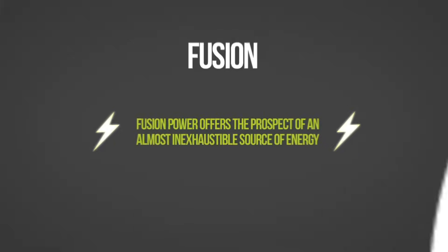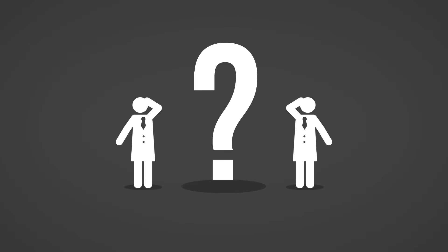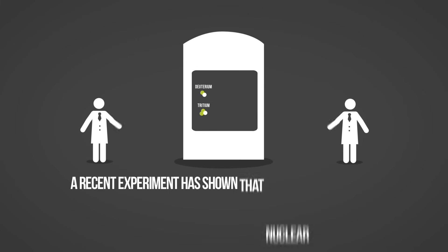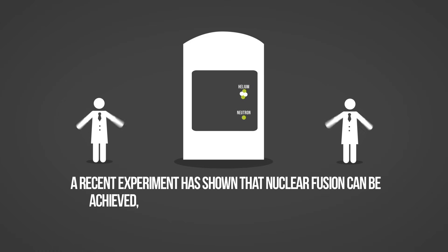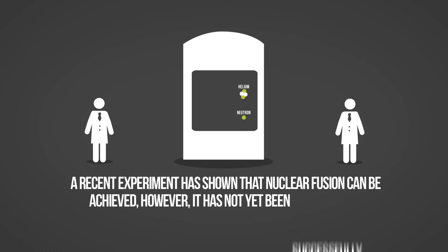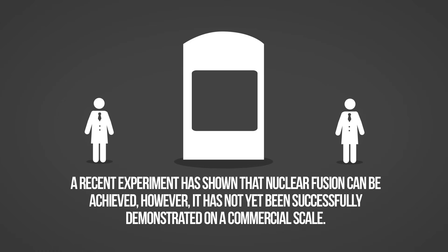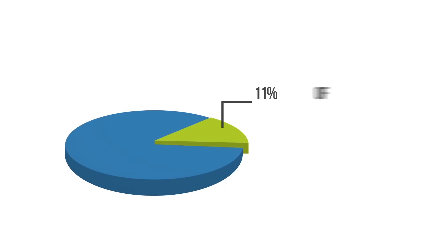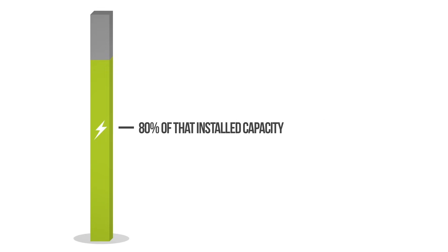However, creating the conditions for nuclear fusion presents a potentially insurmountable scientific and engineering challenge. A recent experiment has shown that nuclear fusion can be achieved. However, it has not yet been successfully demonstrated on a commercial scale. Today, nuclear power plants account for 11% of global electricity generation, with about 80% of that installed capacity being in OECD countries. All of this capacity is nuclear fission.